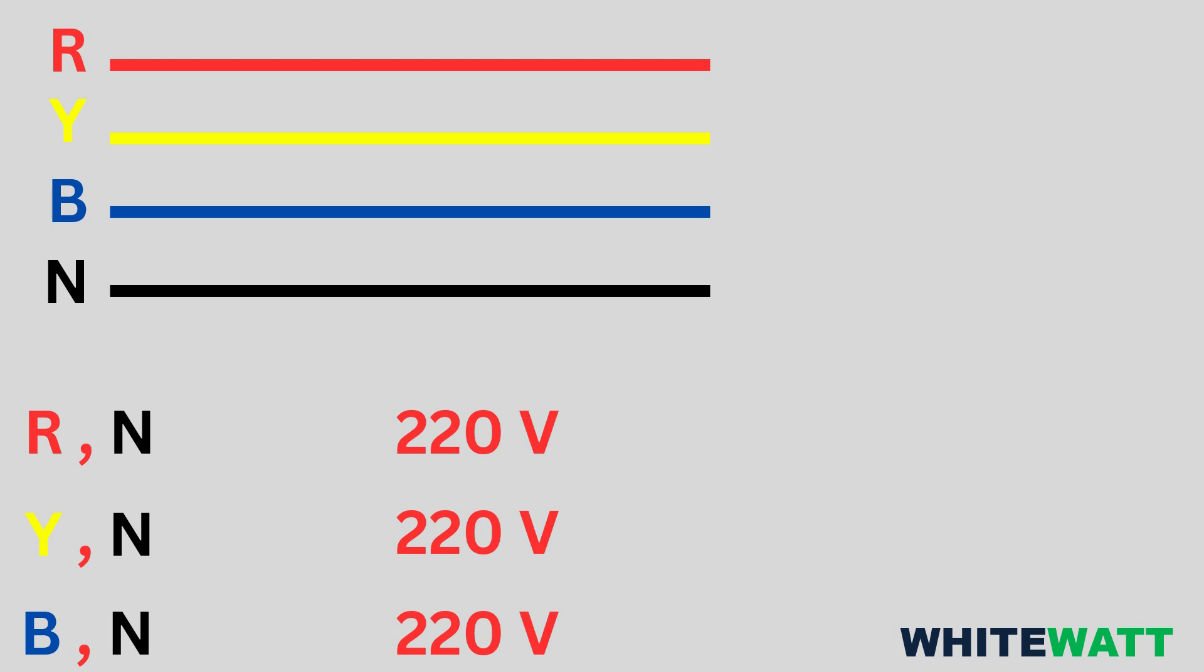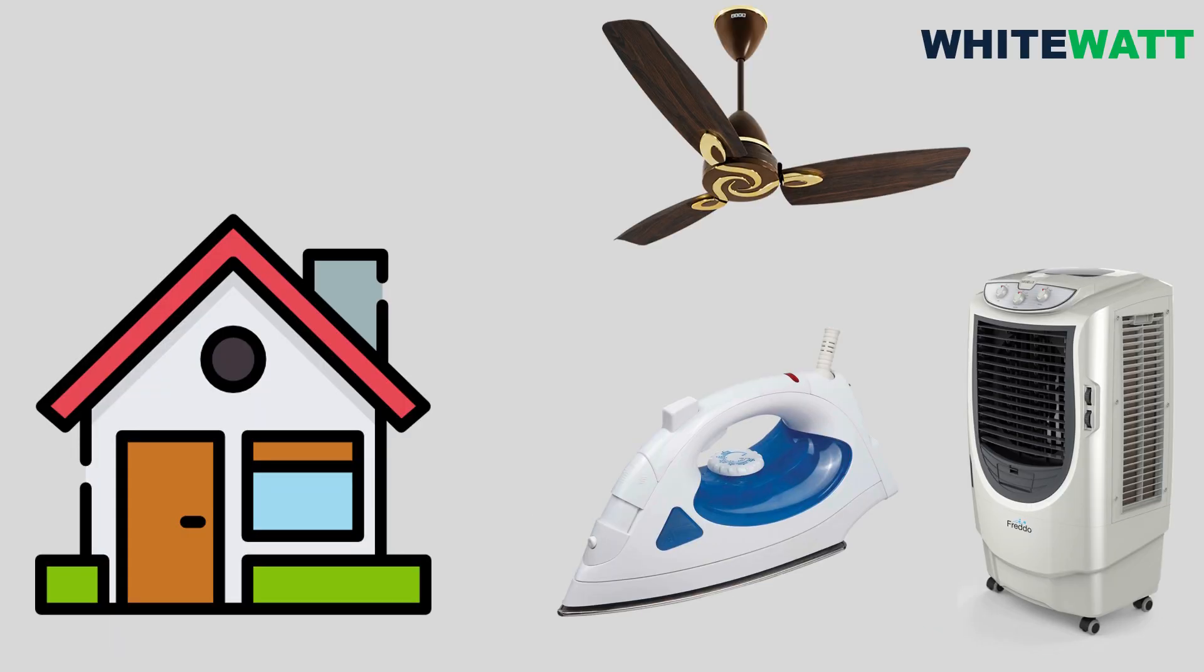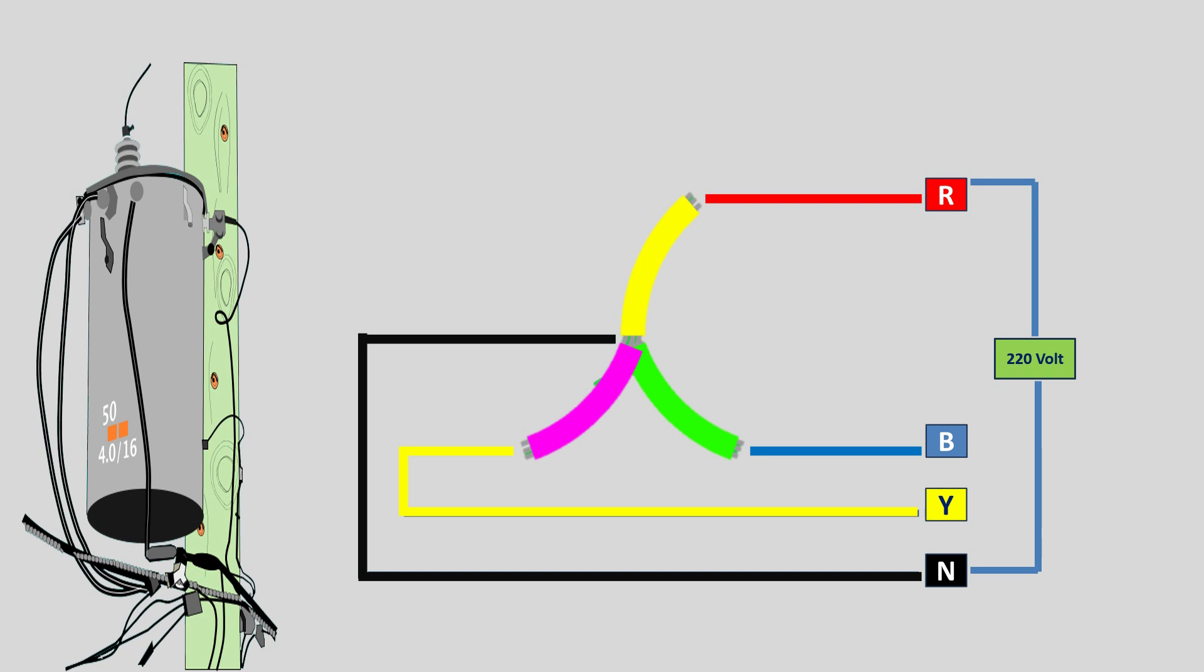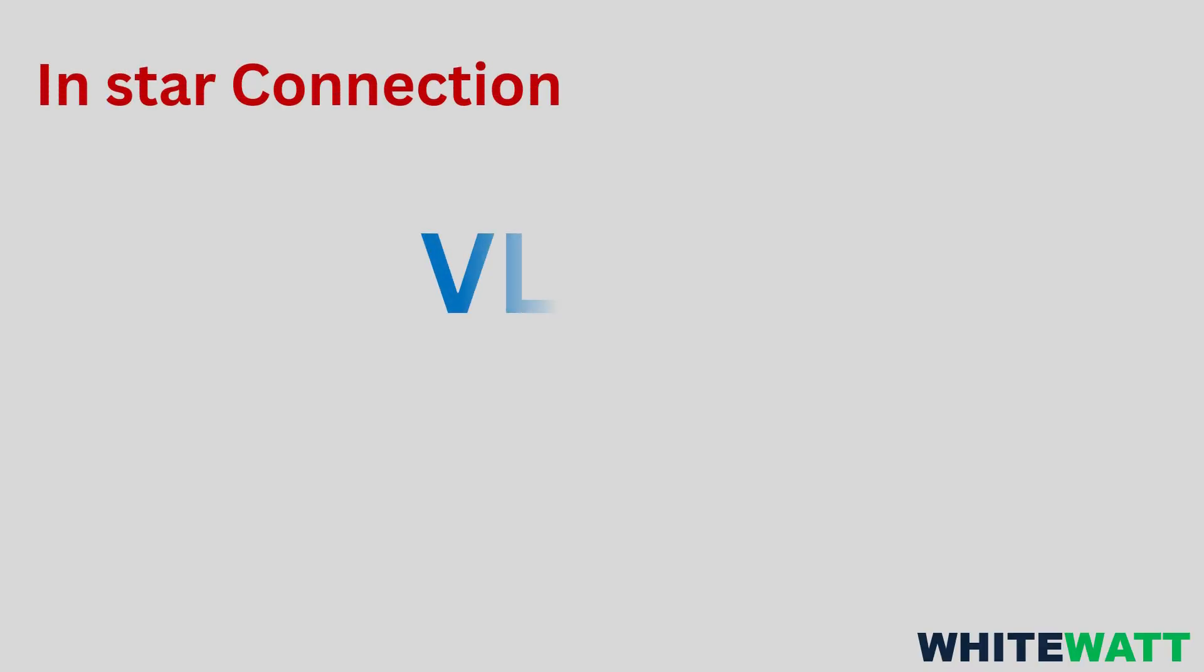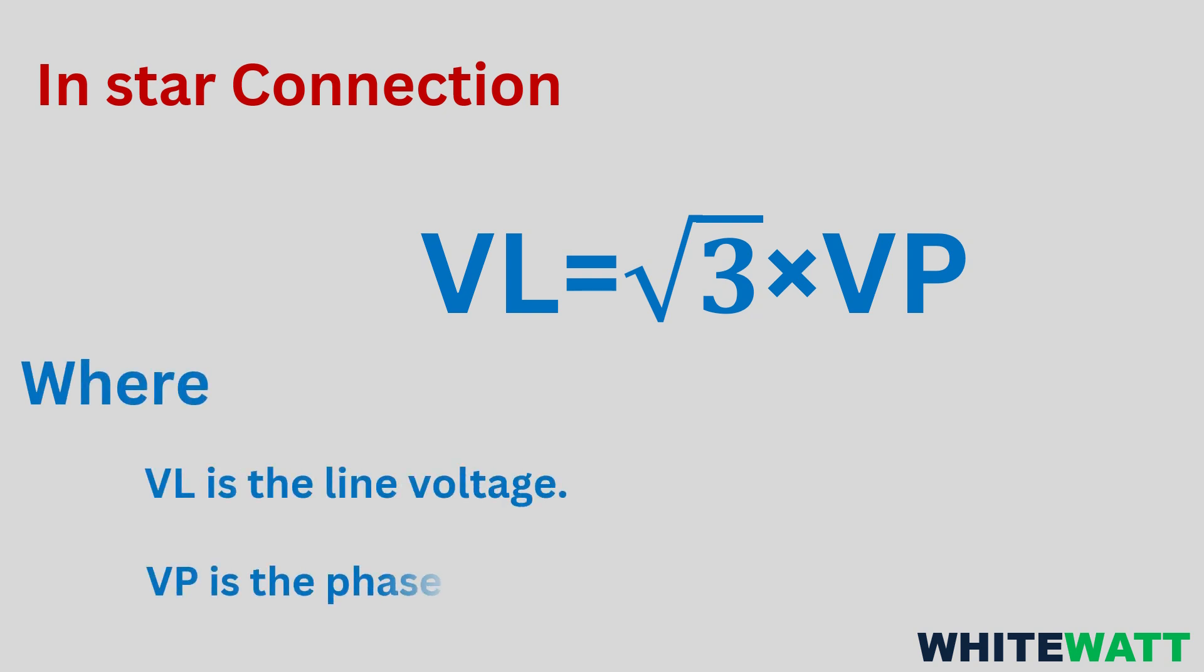It is commonly used in residential single-phase loads derived from a three-phase system. In star connection, VL is equal to square root of 3 multiplied by VP, where VL is the line voltage and VP is the phase voltage.